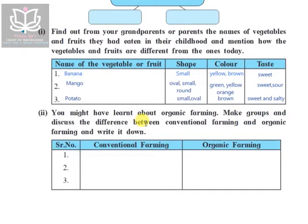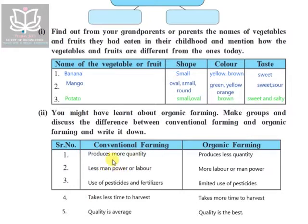You might have learned about organic farming. Make groups and discuss the difference between conventional farming and organic farming. Conventional farming is what most farmers practice nowadays, while organic farming is what farmers used to practice many years ago — and some still do. In conventional farming, the aim is to produce more of whatever is being grown.